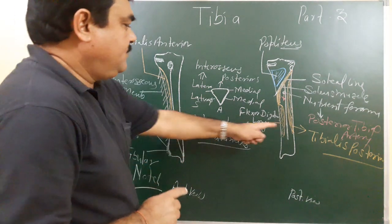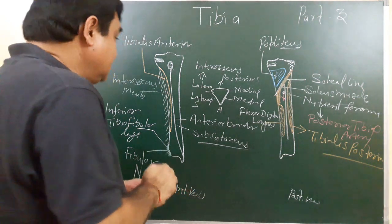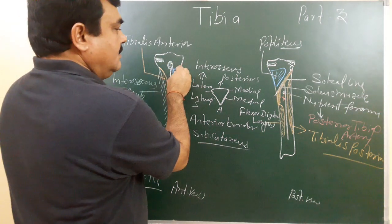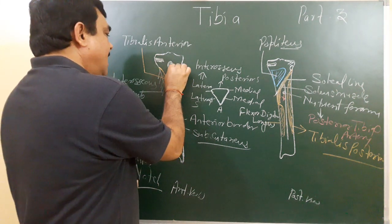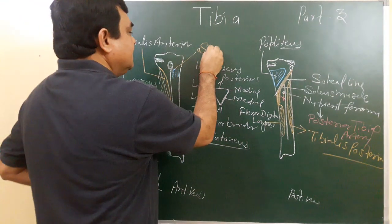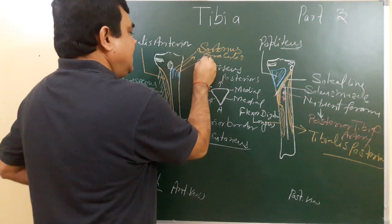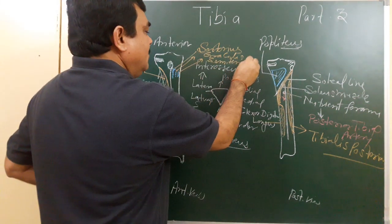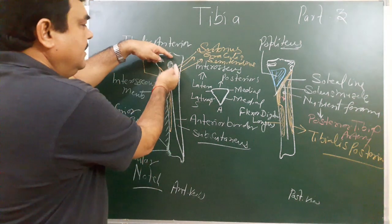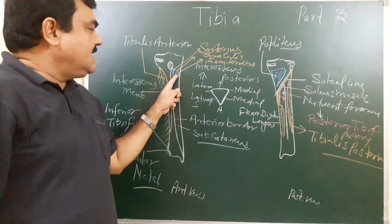And one thing — on the medial surface, in the upper part of the medial surface near the medial condyle, three muscles are inserted. From anterior to posterior: sartorius, gracilis, and semitendinosus. The rest of the medial surface is mostly subcutaneous.